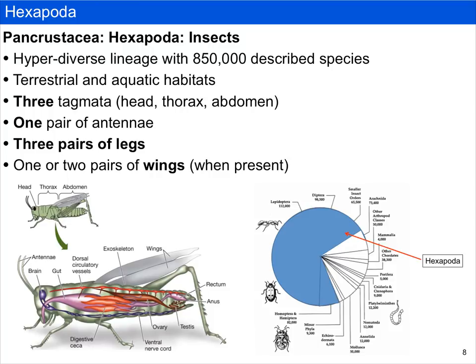They fill roles as predators, parasites, and even parasitoids, which kill their hosts. They have three tagmata — a head, thorax, and abdomen. Tagmata refer to the fusion of an ancestrally more segmented animal. There is one pair of antennae, three pairs of legs, and if wings are present, one or two pairs of wings.